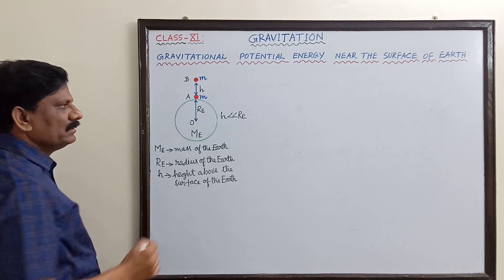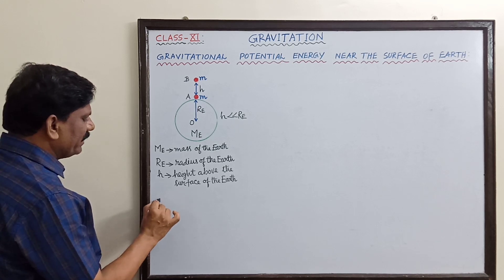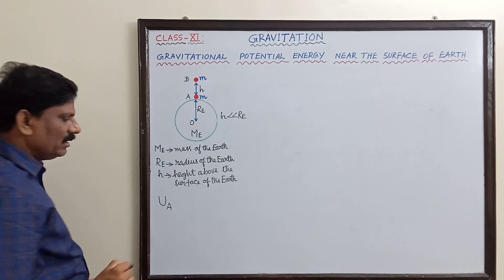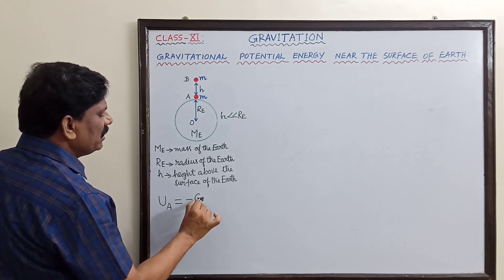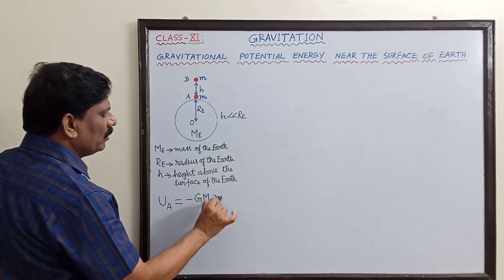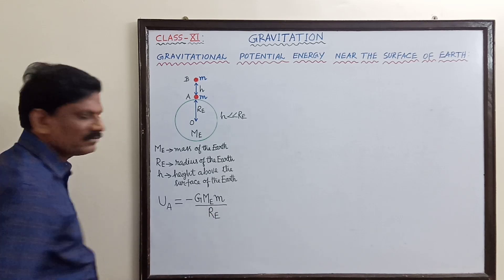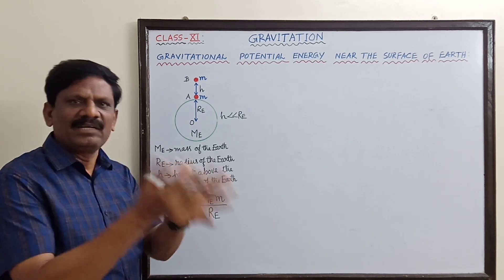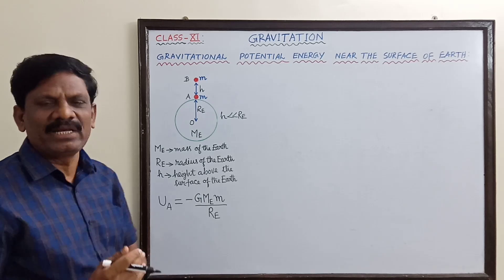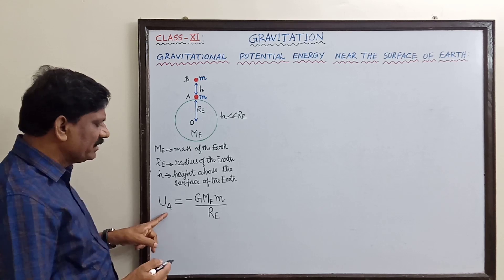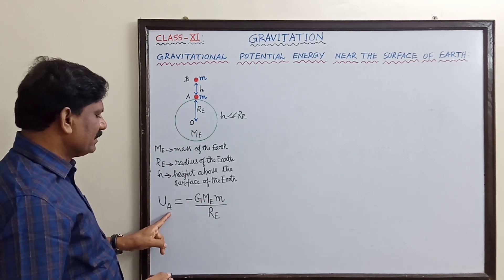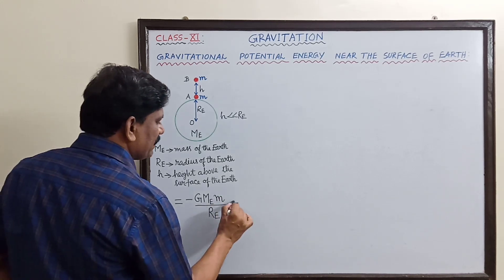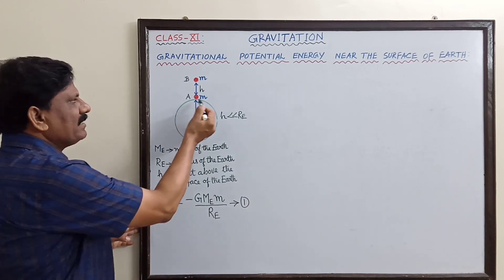The gravitational potential energy of mass m at point A is U_A = −G·M_e·m / R_e. If the second mass is comparatively smaller than the first, this is called the gravitational potential energy of the given mass. So U_A = −G·M₁·M₂ / r, substituting M₁ = M_e, M₂ = m, and r = R_e. This is equation one.